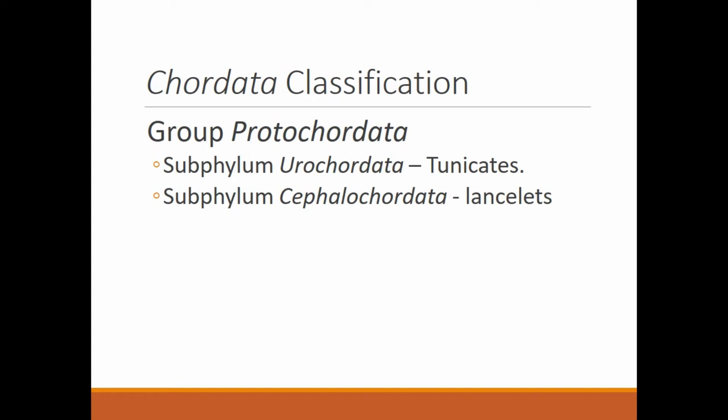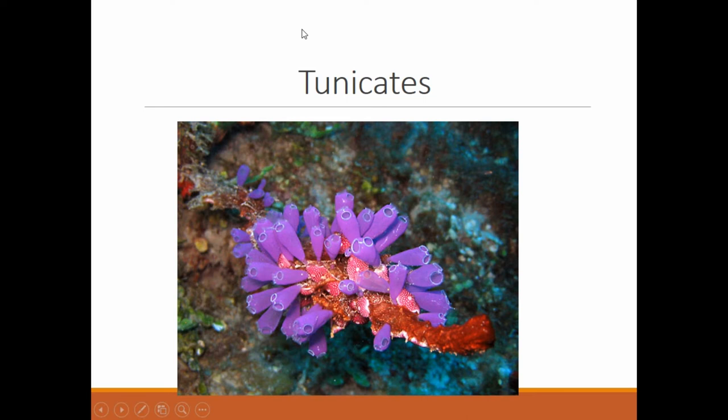Under phylum Chordata we have subphylum Urochordata — these are the tunicates, also known as sea squirts. When you see them you'll wonder how they are chordates, but I will explain. Then there is subphylum Cephalochordata, which are your lancelets. These are the animals that do not have a vertebral column — they have a dorsal nerve cord and a notochord, but it is not encased in a spinal column.